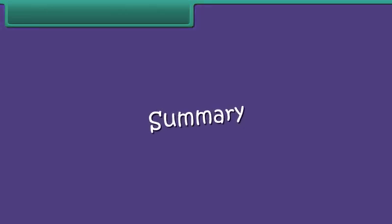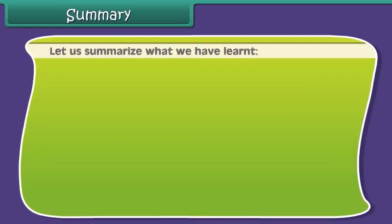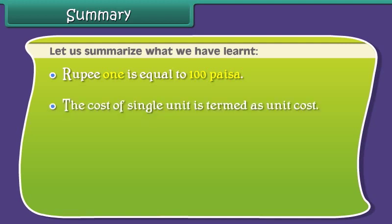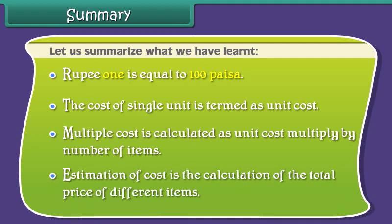Summary. Let us summarize what we have learnt. Rupee 1 is equal to 100 paisa. The cost of a single unit is termed as unit cost. Multiple cost is calculated as unit cost multiplied by number of items. Estimation of cost is the calculation of the total price of different items.